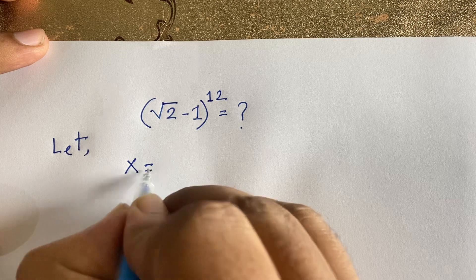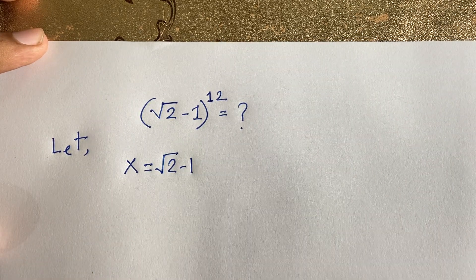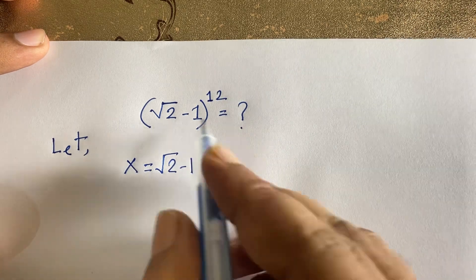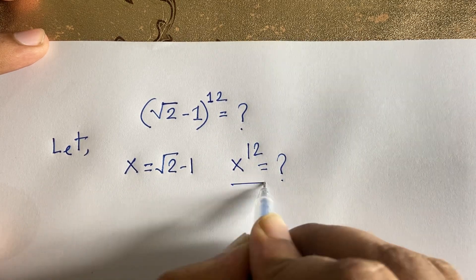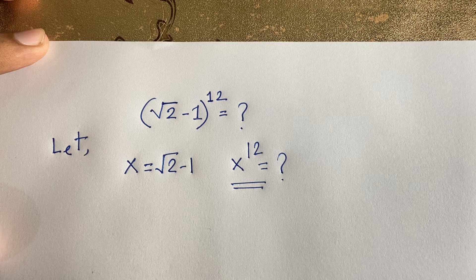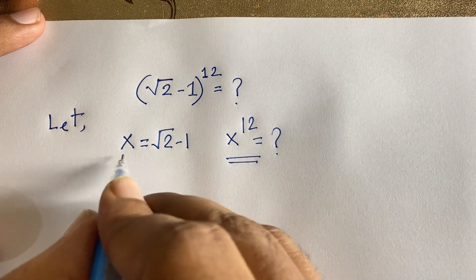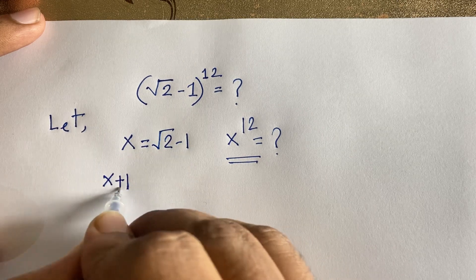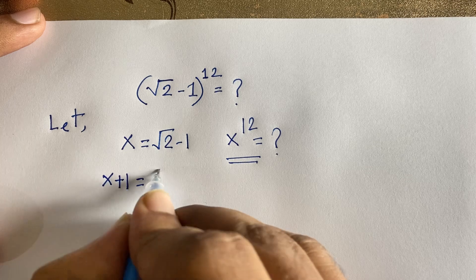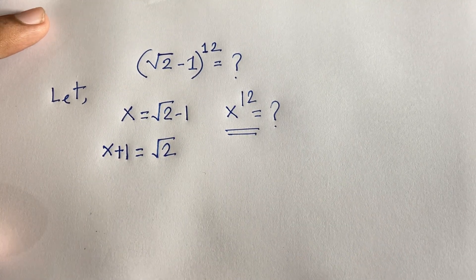We let x equal to √2 - 1. So we are letting x = √2 - 1. If we put this x in the question, our question at this moment becomes: x to the power 12 is equal to what. Now if I move 1 to the other side, I can say x plus 1 is equal to √2.